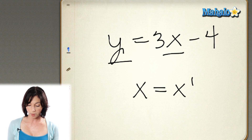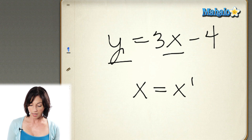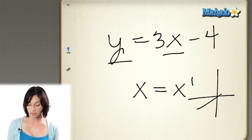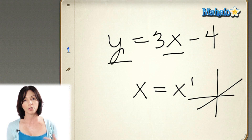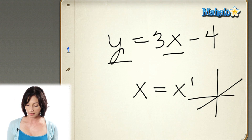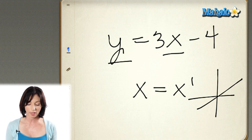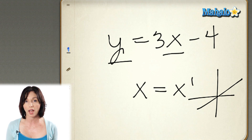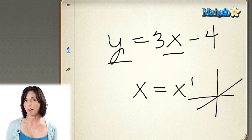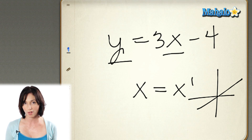Whenever you graph an equation like this, it will be a line. It'll slope to the left or to the right, and it'll intersect the axes at different points depending on the values. But they're all equations of lines.